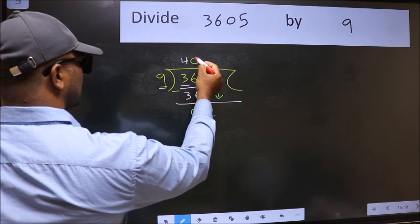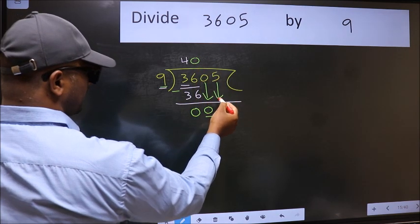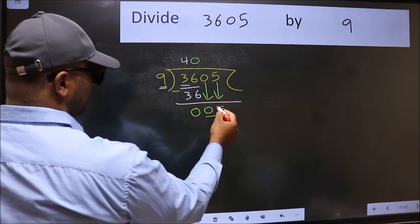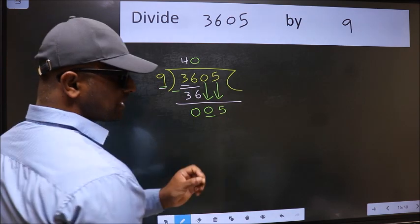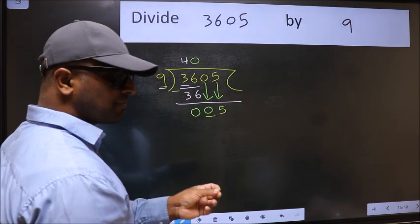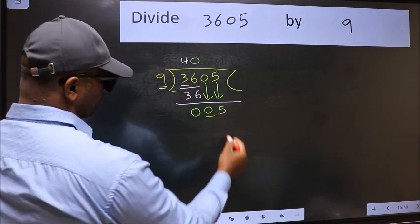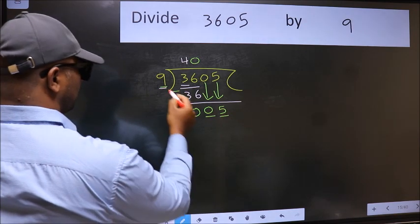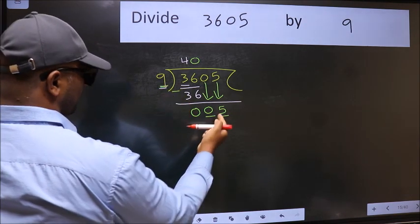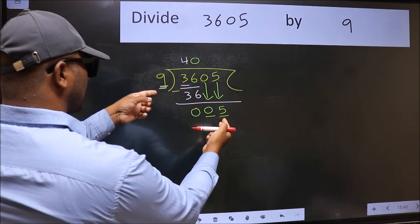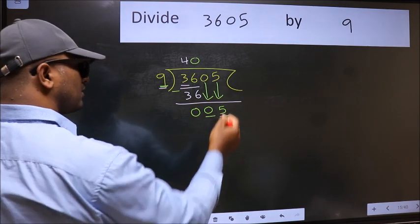And the rule to bring down the second number is we should take zero here, then only we can bring down this number. After this step, the mistake happens. And the mistake is this: here we have 5 and here 9. 5 is smaller than 9 and we don't have any more numbers to bring it down.